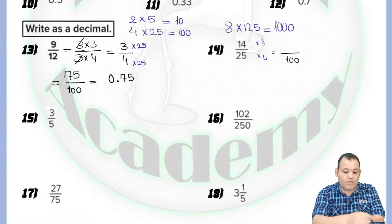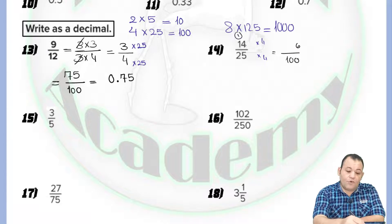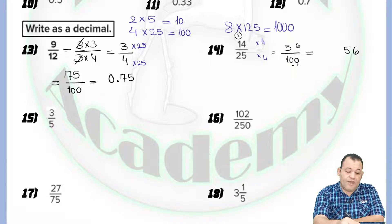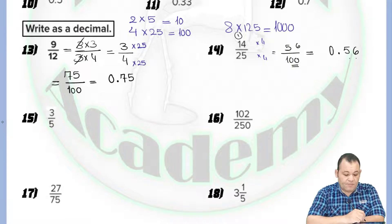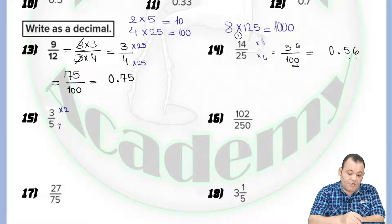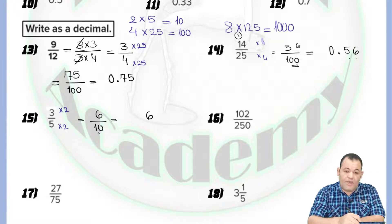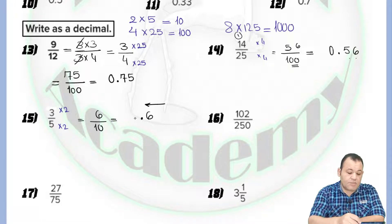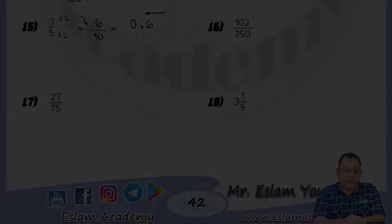Fourteen times four: four times four equals sixteen, carry one; four times one equals four, plus one equals five. So it's fifty-six. There is no whole number, so write fifty-six. Because we have two zeros, count two places from right to left and put the decimal point, giving 0.56. For the next example with denominator five, multiply by two: three times two equals six, five times two equals ten. Count one digit from right to left, put the decimal point, and write zero as the whole number, giving 0.6.